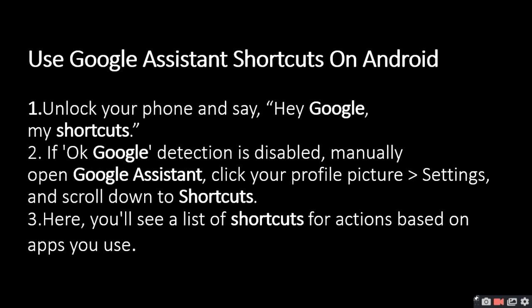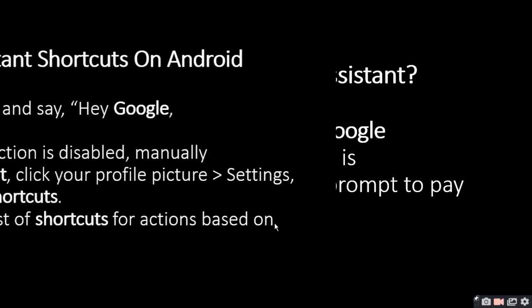If OK Google detection is disabled manually, or if OK Google detection is not working, you need to manually click on Google Assistant, go to your profile, click on Settings, scroll down, and click on Shortcuts. There you will see a list of shortcuts for actions based on the apps you use, and you will find your shortcuts manually.